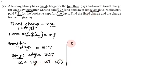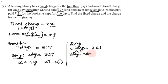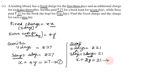For Suzy, she kept the book for 5 days and paid 21 rupees. That means fixed charge for 3 days plus 2 extra days: x plus 2y equals 21. This is equation 2.